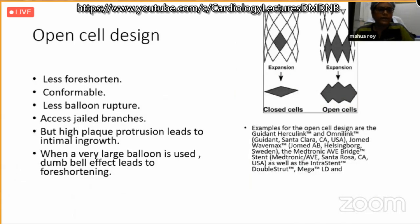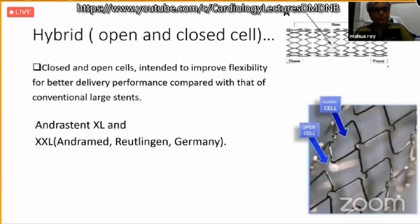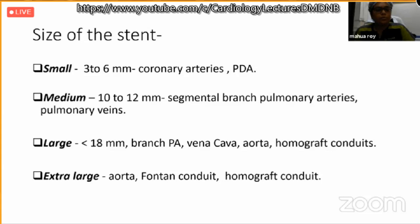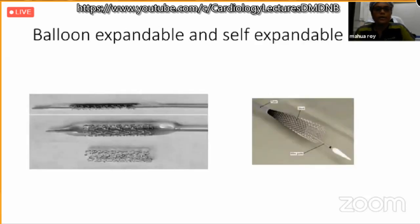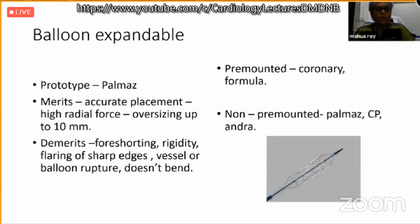Open-cell design advantages include less chance of balloon rupture, but disadvantages include higher plaque protrusion. There is also a hybrid cell concept combining open plus closed cell design. Size-wise, stents can be divided into small, medium, large, or extra-large; small stents are mostly used in pediatric cardiology for ductal stenting.